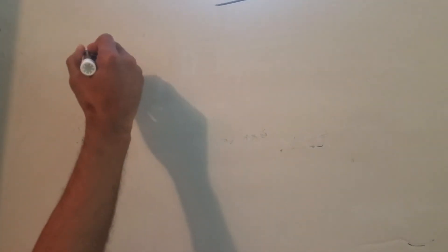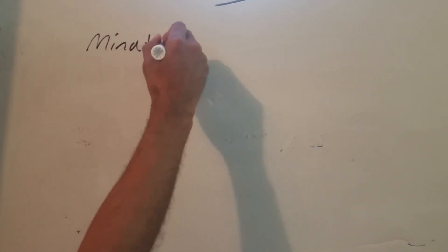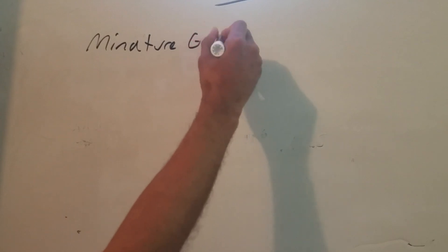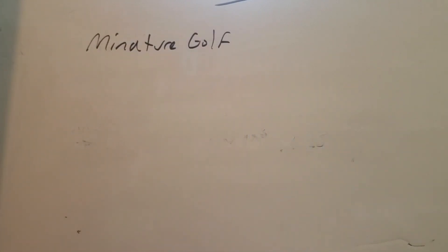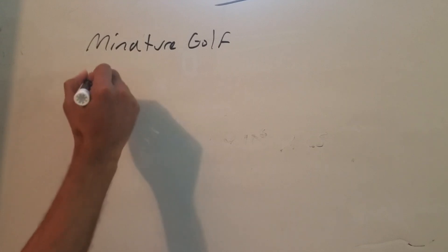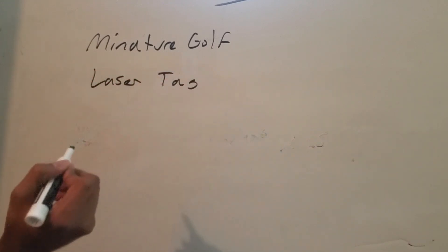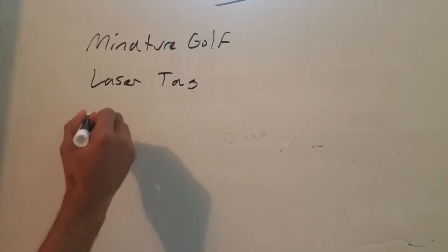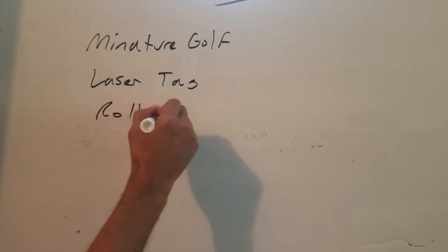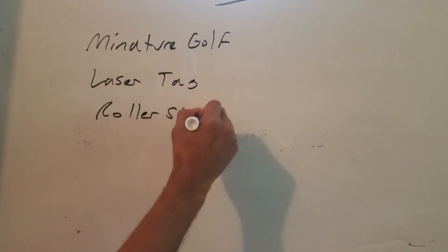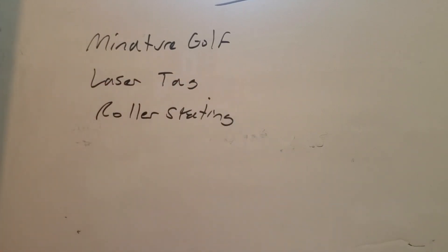Let's say that we have a birthday party and at this birthday party there are three activities you can do. You could do miniature golf, you could do laser tag, and you could do roller skating. Now you have two times you can choose to do any of these activities. You can either do them at 1 o'clock or 6 o'clock.